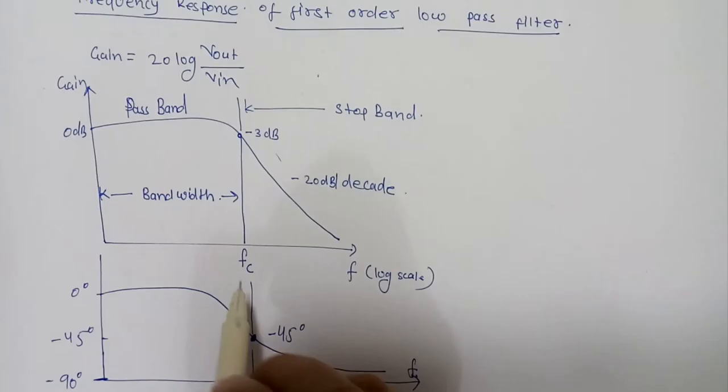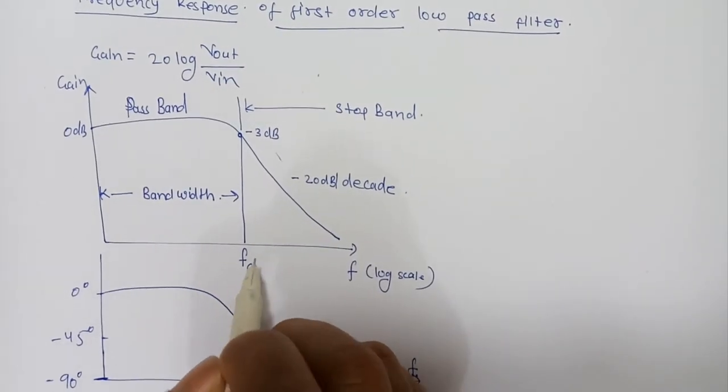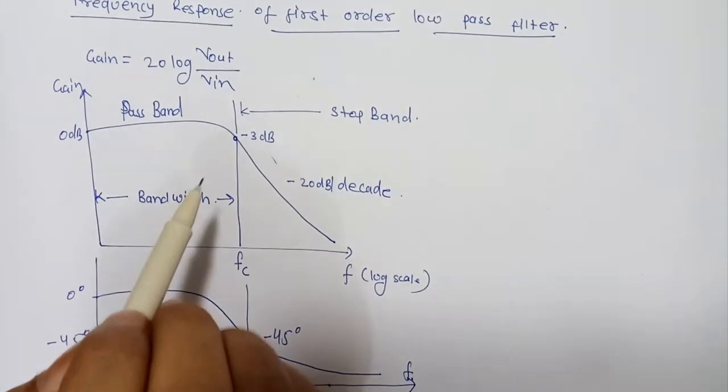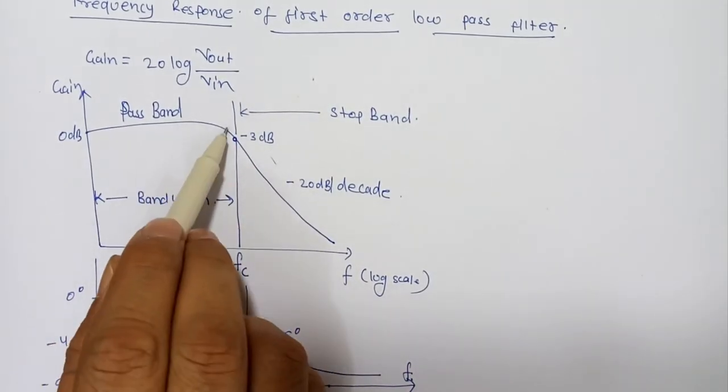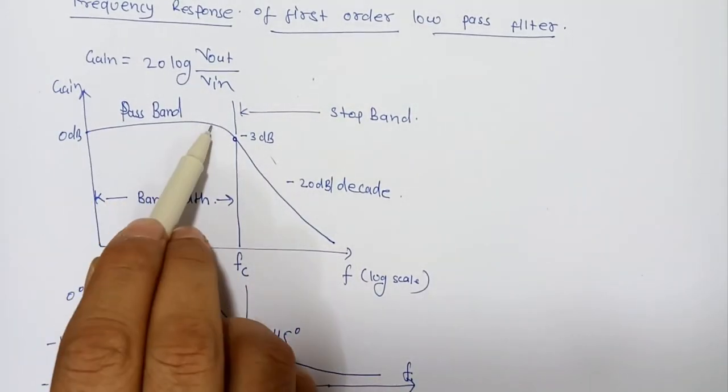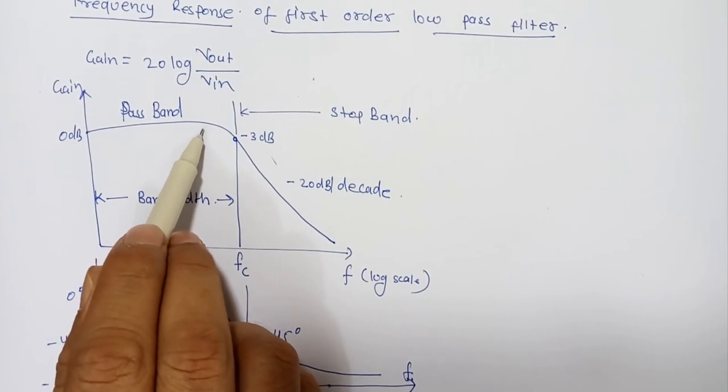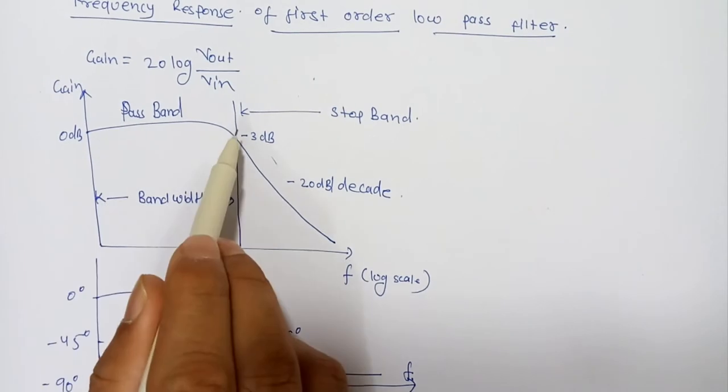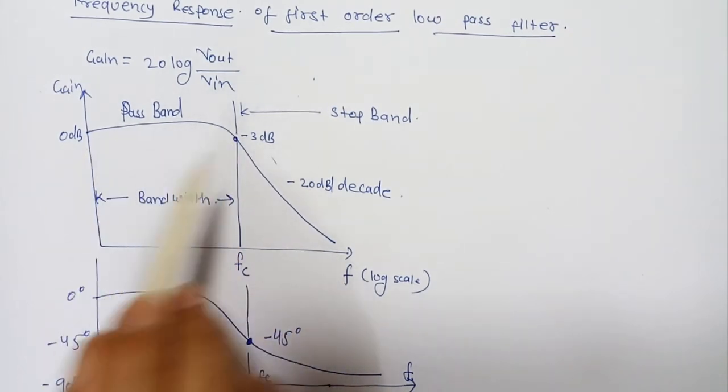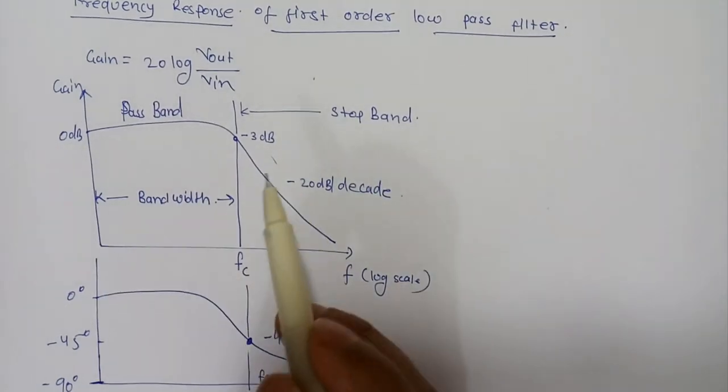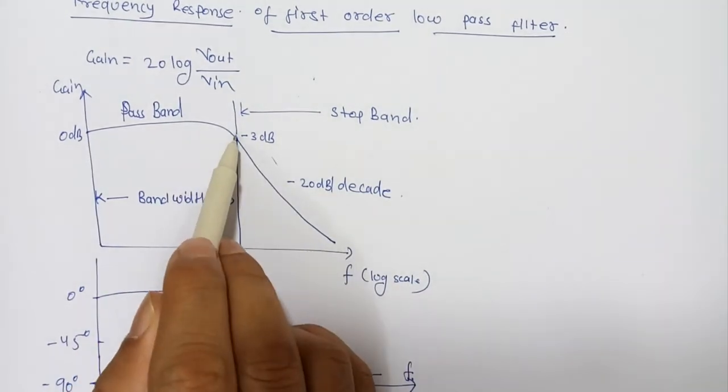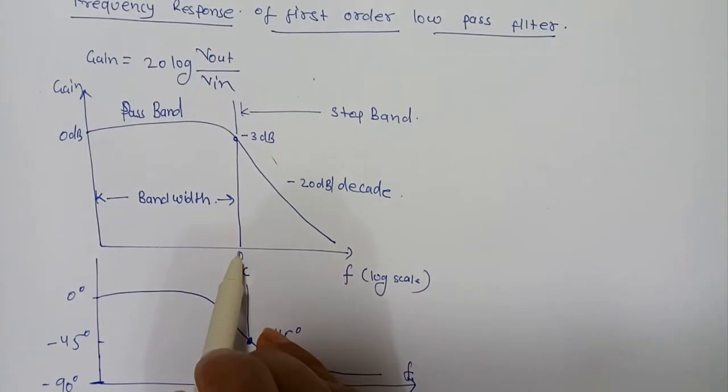If we summarize this Bode plot, the Bode plot shows the frequency response of the total filter that is nearly flat before the cutoff frequency Fc. All of the input signal is passed directly to the output, resulting in a gain of nearly one, called unity, until it reaches the cutoff frequency Fc.